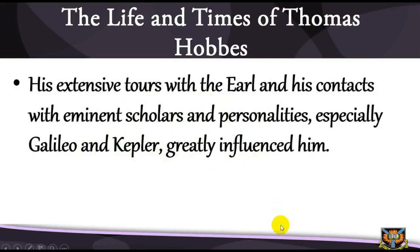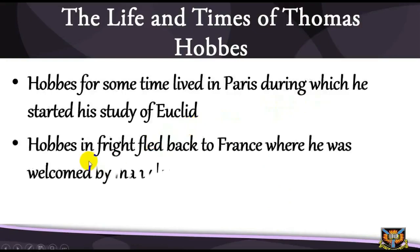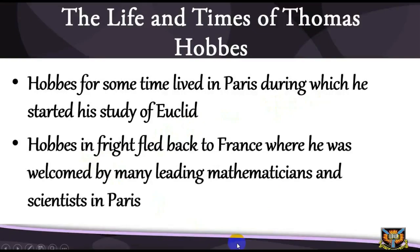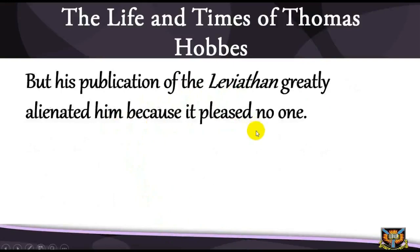On the death of the Earl, Hobbes also became the tutor of the son, and with him toured Italy. That Hobbes's political views in the Leviathan were realist in the extreme is thus quite understandable. After the death of the Earl of Devonshire, Hobbes for some time lived in Paris, during which he started his study of optics. When Laud and Strafford were sent to the Tower during the Long Parliament, Hobbes in fright fled back to France, where he was welcomed by many leading mathematicians and scientists and even had the privilege of teaching mathematics to the future Charles II. But his publication of the Leviathan greatly alienated him because it pleased no one — his rationalism offended most of the refugees and his bitter attacks on the Catholic Church offended the French government.